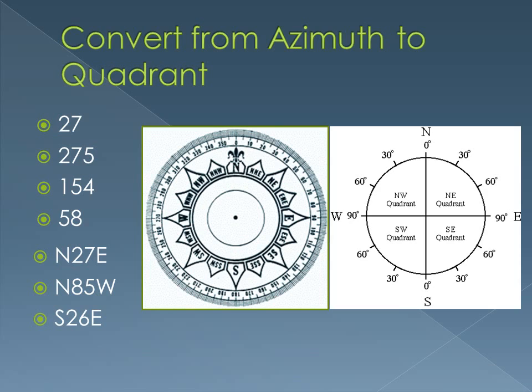The last azimuth-to-quadrant example is 58 degrees — another pretty easy one in the northeast quadrant. It's 58, so we start at north and go 58 degrees east: north 58 east.